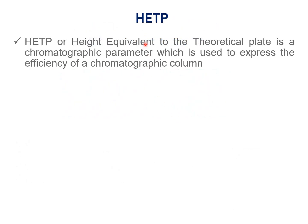Now let us learn what is HETP. HETP is also called Height Equivalent to the Theoretical Plate. It is used to express the efficiency or performance of a chromatography column. It is denoted by H.